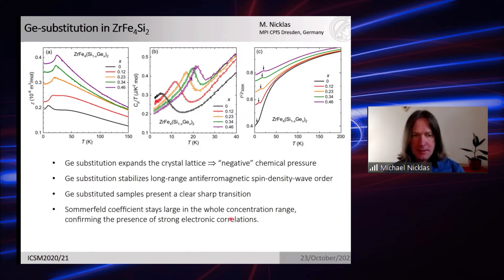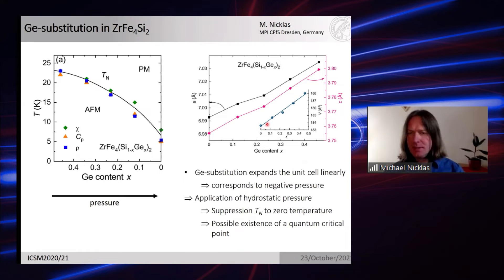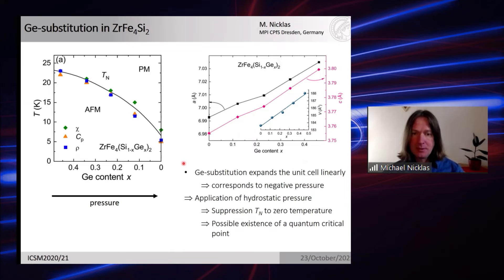The Sommerfeld coefficient stays large across the whole range, confirming strong electronic correlations. This data can be summarized in a temperature versus germanium-content phase diagram, where decreasing germanium content suppresses TN and corresponds to negative pressure. Structural data shows a linear relation between germanium concentration and lattice volume, suggesting a good one-to-one correspondence between germanium substitution and hydrostatic pressure. We would therefore expect hydrostatic pressure to suppress magnetic order to zero temperature and possibly reveal a quantum critical point.